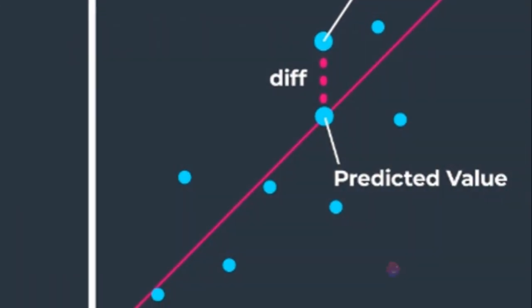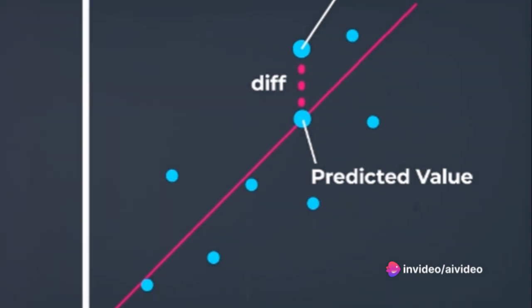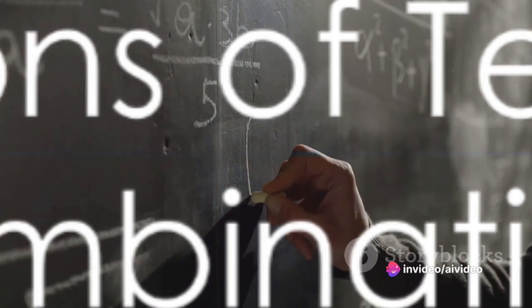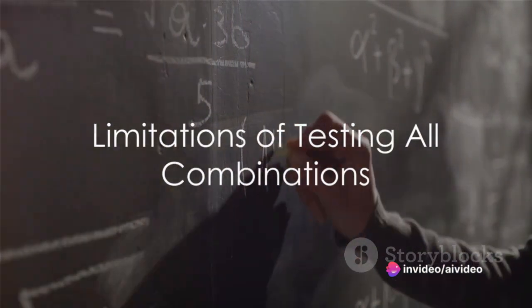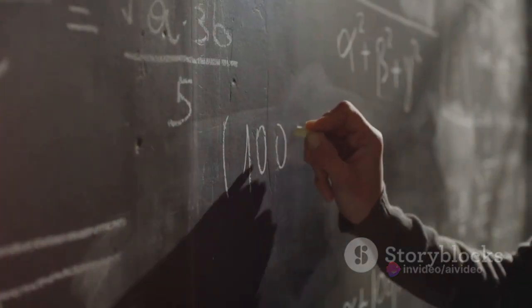Essentially, the predicted weights need to be as close as possible to the actual weights. Yet, with the potential for countless combinations of M and C, it's impossible to test them all.